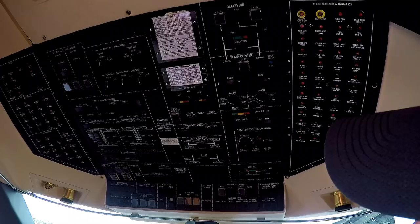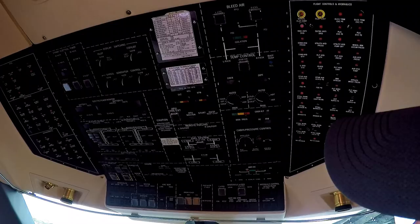Right here we have the overhead panel of the airplane. We're going to turn on the battery switches first to get things started. We have two batteries - there's one, there's number two. Notice we start getting some lights, start getting some bells.